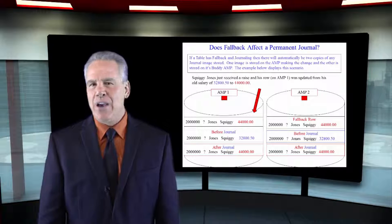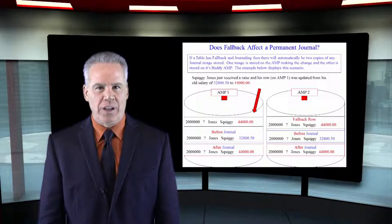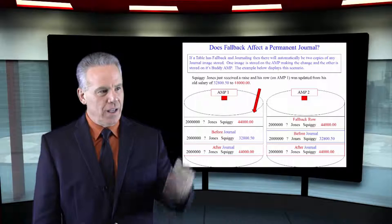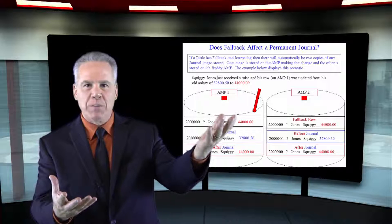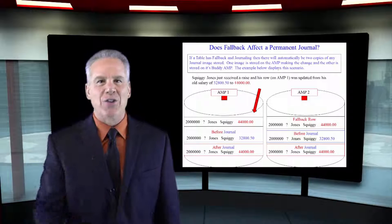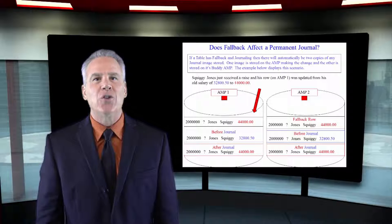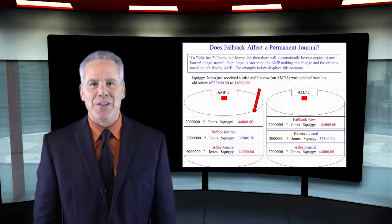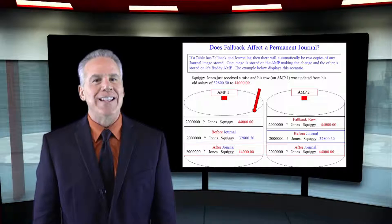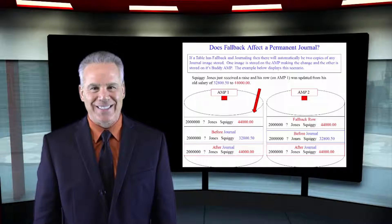How does fallback affect journaling? Fallback copies the rows to its buddy amp, so since you're also getting journaling, it's going to make another copy there as well. So it's double the space.